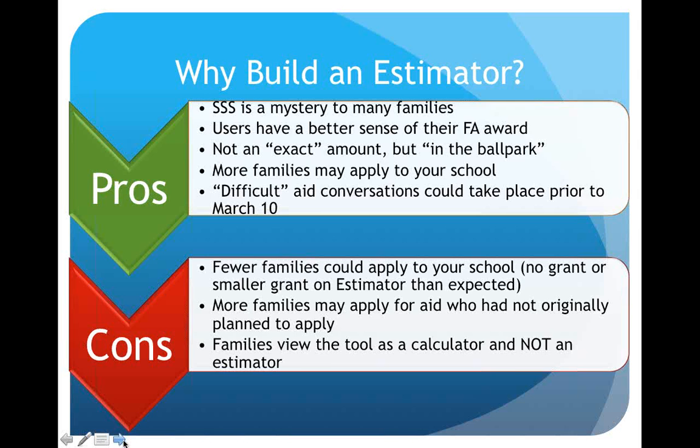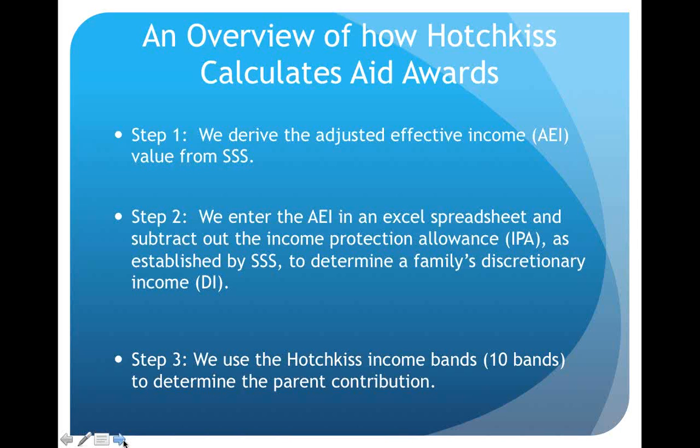An overview of how we calculate aid awards: we derive our adjusted effective income value from SSS, enter it in an Excel spreadsheet, and subtract out the income protection allowance established by SSS to determine the family's discretionary income. We then use one of ten income bands to determine the parent contribution.